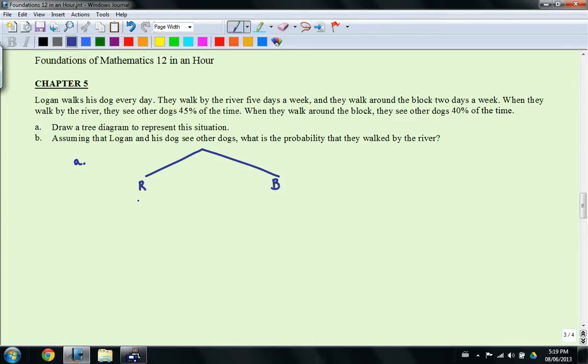So this will be about river and the block. And then the second layer of course is dog and no dog. So this will be dog, no dog, dog, no dog. So D, D prime, D and D prime.